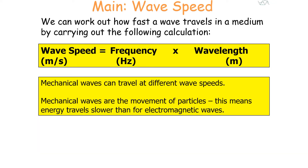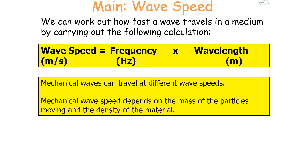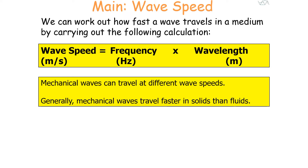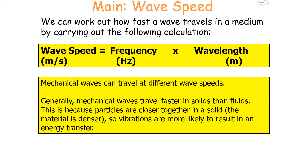A mechanical wave can travel at different wave speeds. Mechanical waves are the oscillations of particles, which means energy travels slower in a mechanical wave than an electromagnetic wave. The mechanical wave speed depends on the mass of the particles' movement and the density of the material. Generally, mechanical waves travel faster in solids than in fluids, because the particles are closer together in a solid as the material is denser, so vibrations are more likely to result in an energy transfer.